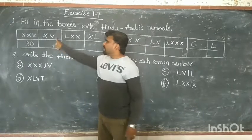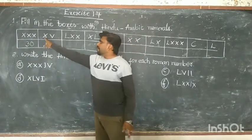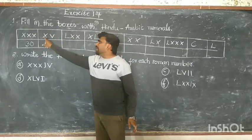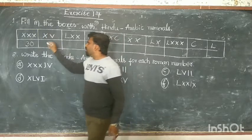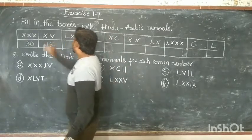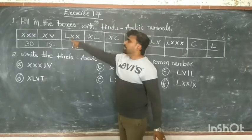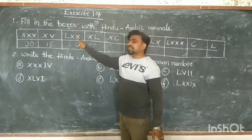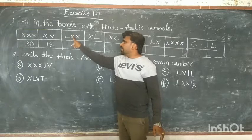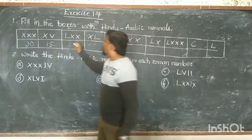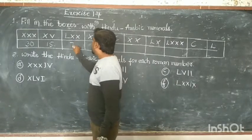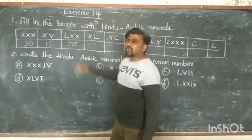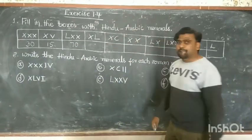Second: V means 5, X means 10. So XXX plus V: 10 plus 10 plus 10 plus 5 equals 35? — total it is 50? No — L means 50. Then LXX: 50 plus 10 plus 10, that means 70. Clear.